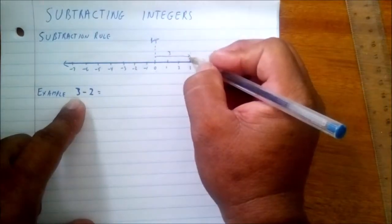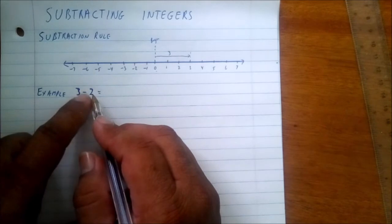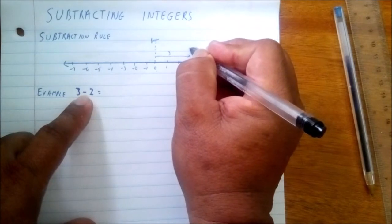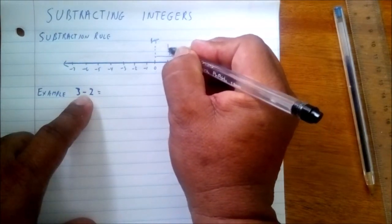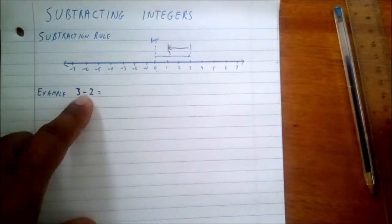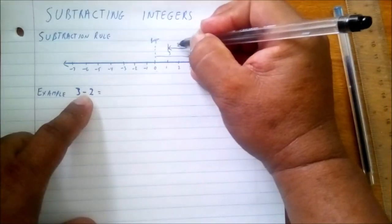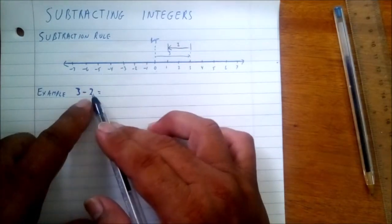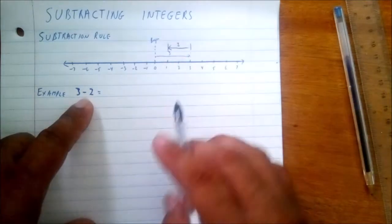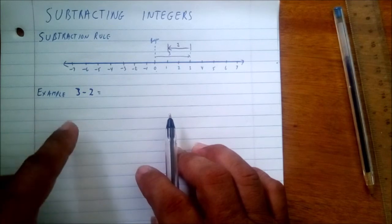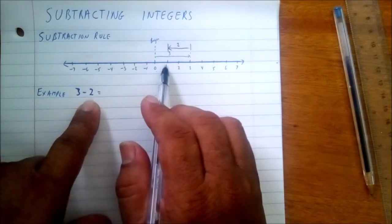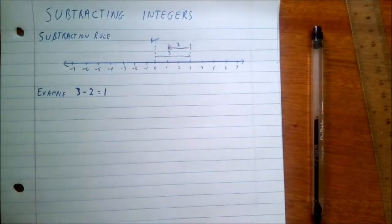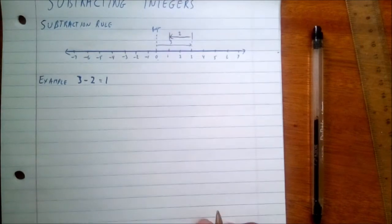We are going to take away two, so when we went three forward we came back two — one, two — which is at this point here. That is two units. The positive value went to your right-hand side, the negative went to the left-hand side. This now is our solution, which gives us one unit, so that's one.